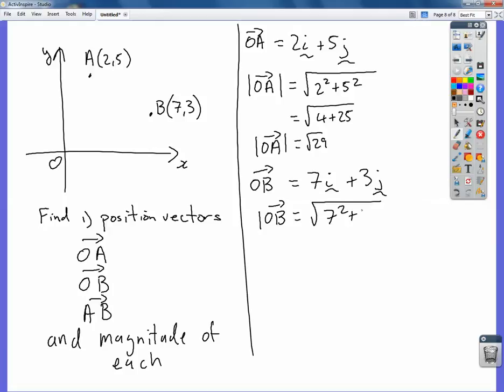And the magnitude from O to B is 7 squared plus 3 squared. So 49 plus 9 gives me 58. The square root of 58, and I won't worry too much about that.